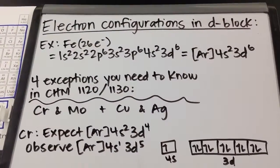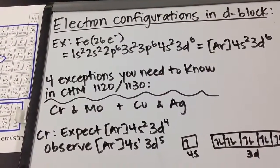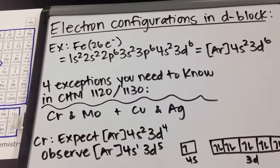Now, there are four exceptions in the D-block that you need to know for CHEM 1120 and CHEM 1130, and they are chromium and molybdenum, and copper and silver.